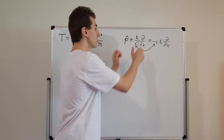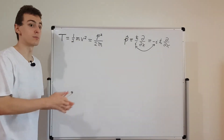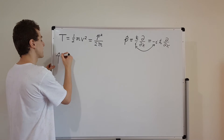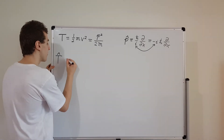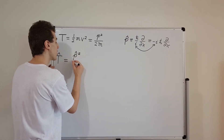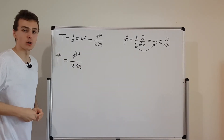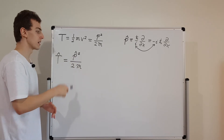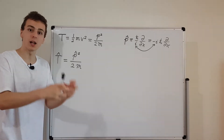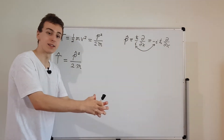We're going to use the momentum operator in conjunction with the classical expression to define the kinetic energy operator in quantum mechanics. The kinetic energy operator, T-hat, is defined to be equal to p-hat squared over 2m. The 1 over 2m is just a constant, and the momentum operator squared means that you have to apply the operator twice — you apply this combination to a function twice. That's what this squared means.